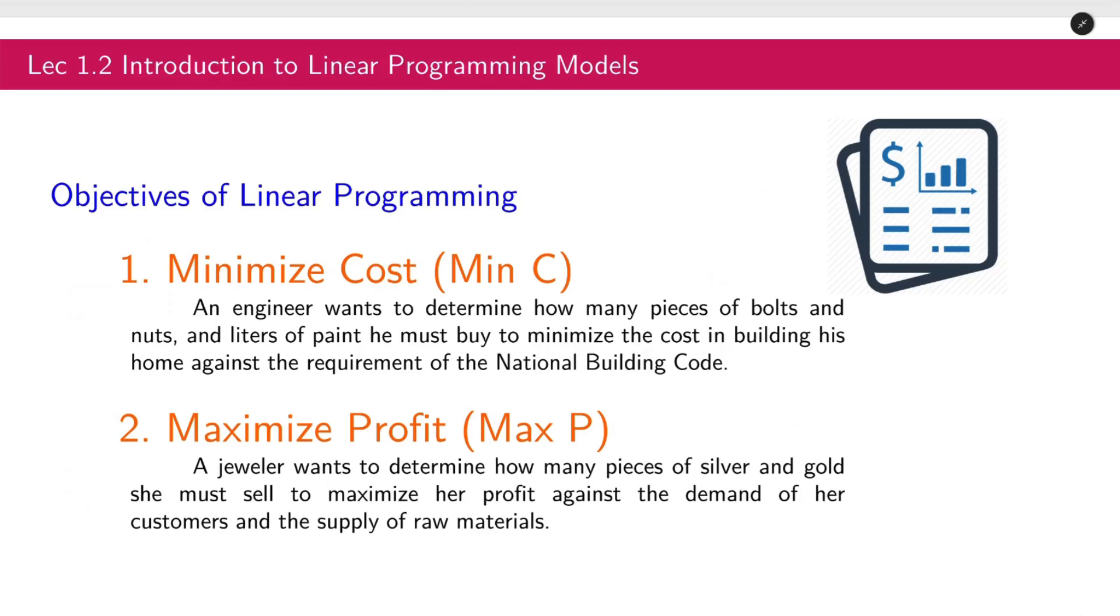Like what I mentioned earlier, the objectives of linear programming are minimize cost and maximize profit. Let's have an example on minimize cost or min C. Take note that we can also write this one as lowercase min C or in other textbooks, min W. An engineer wants to determine how many pieces of bolts and nuts and liters of paint he must buy to minimize the cost in building his home against the requirement of the National Building Code.